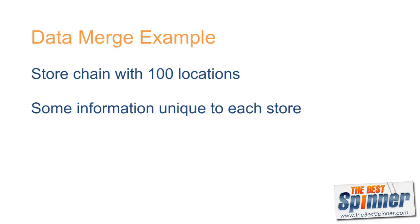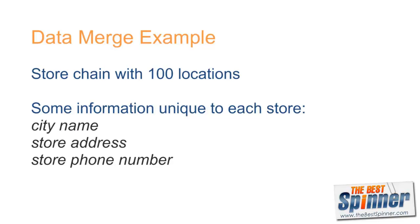Suppose that each store has the following unique information: city name, store address, store phone number, and store opening hours. We have a plain text comma-delimited file with that information already, which looks something like this.